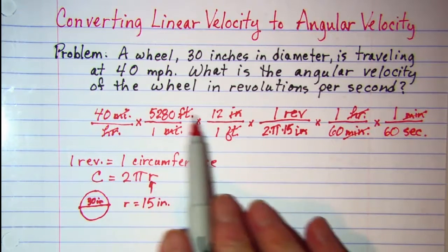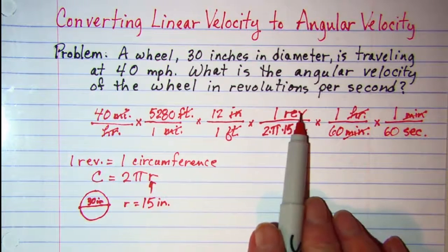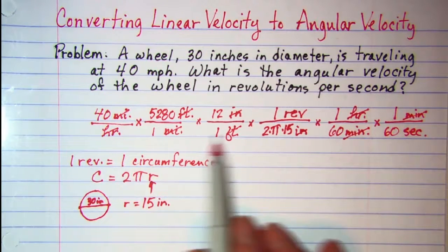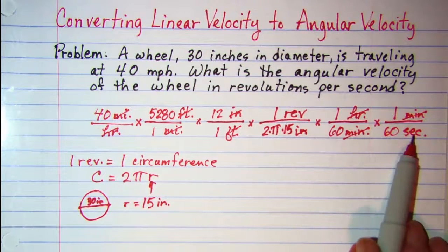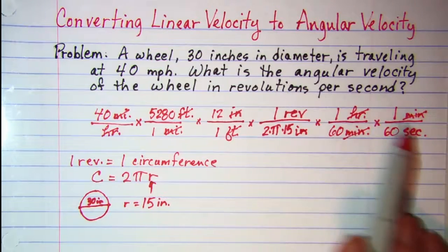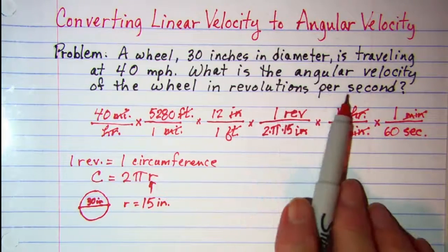So now the units that are left, I have revolutions in the numerator and seconds in the denominator, which is what I want, revolutions per second.